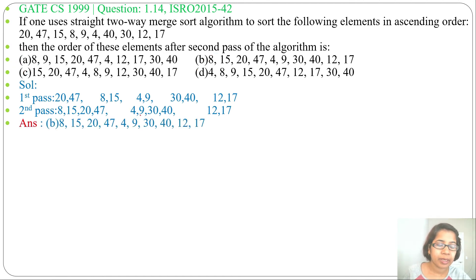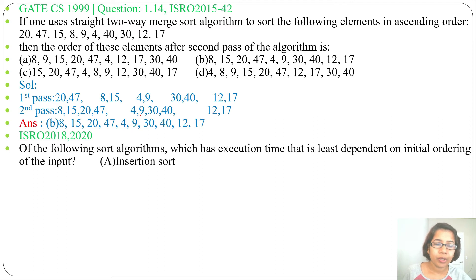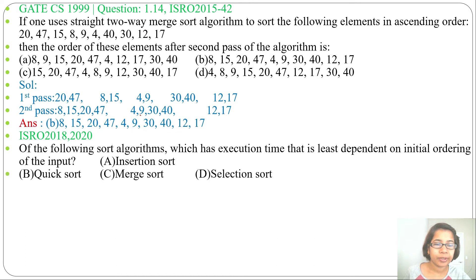Next question, it was asked in ISRO 2018 and also 2020: of the following sorting algorithms, which has execution time that is least dependent on the initial ordering of the input? There are four options — option A: insertion sort, option B: quick sort, option C: merge sort, option D: selection sort.